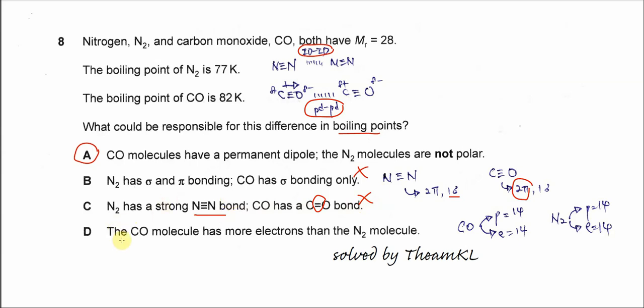For option D, the CO molecule has more electrons than the nitrogen molecule. This is also not correct—it's actually equal. The total protons in CO is 14, therefore electrons are also 14. For nitrogen, total protons also need to be 14, so they have the same number of electrons. D is also wrong.